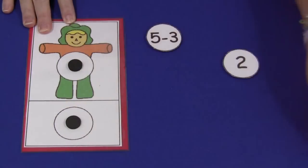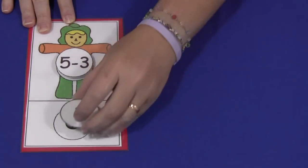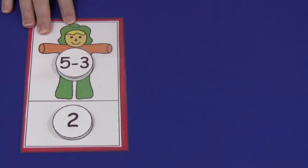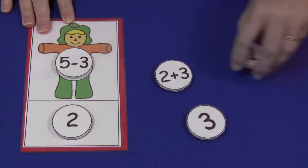And you could also do it with a subtraction equation, 5 minus 3 equals 2. So there's lots of different ways you could do this with the number matching mat and the circles provided.